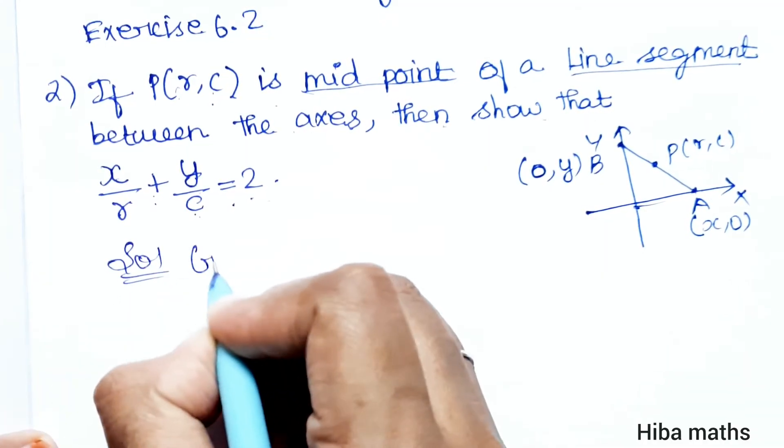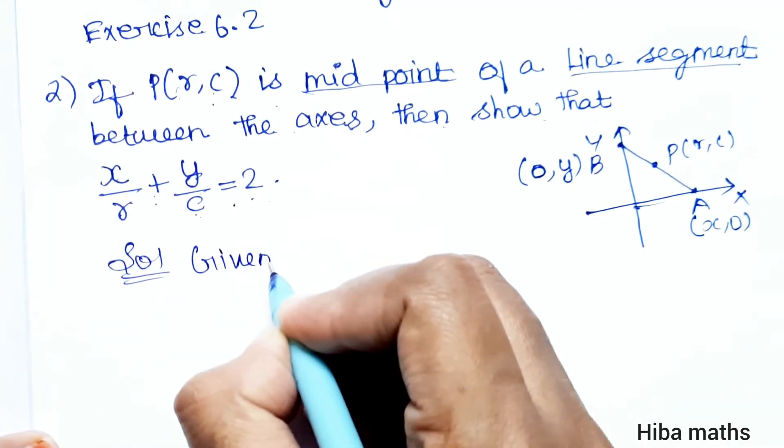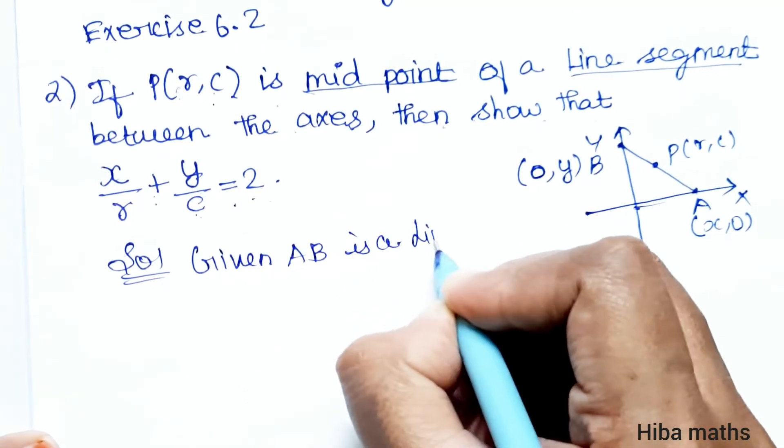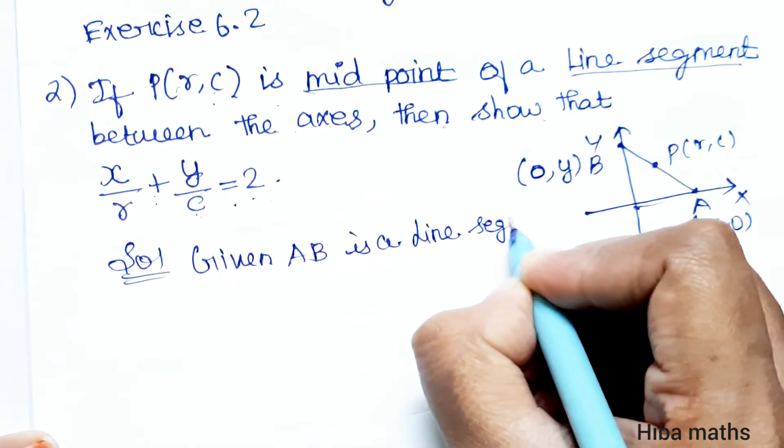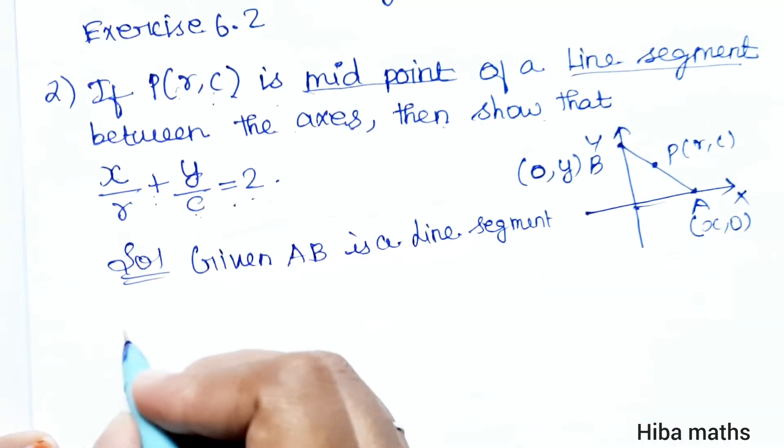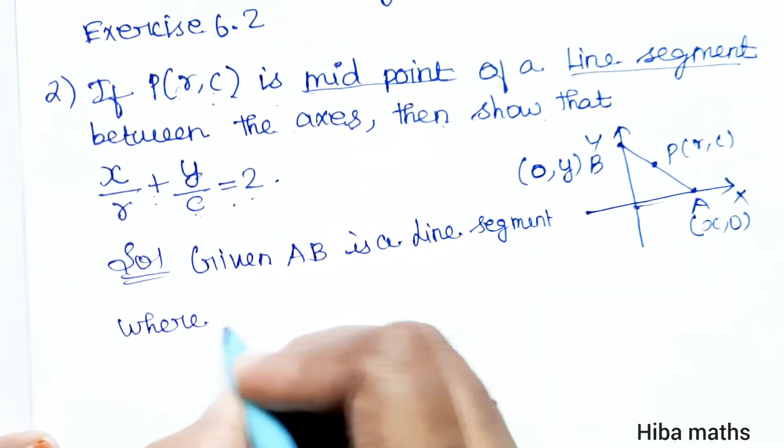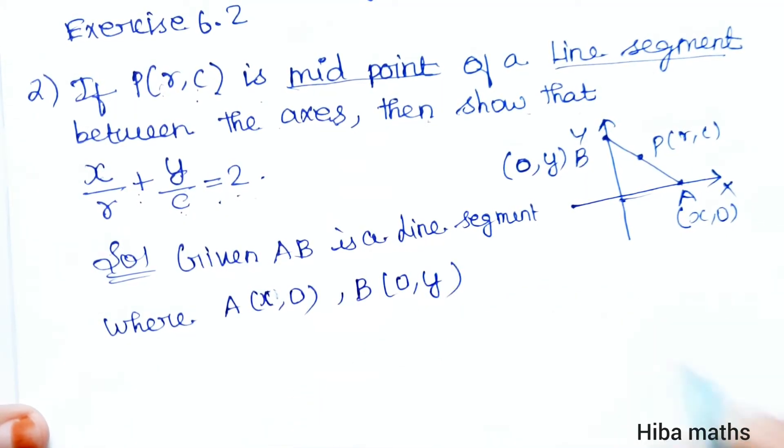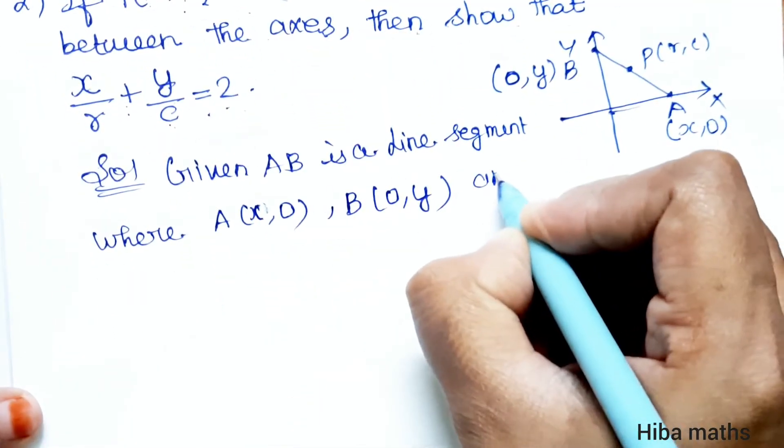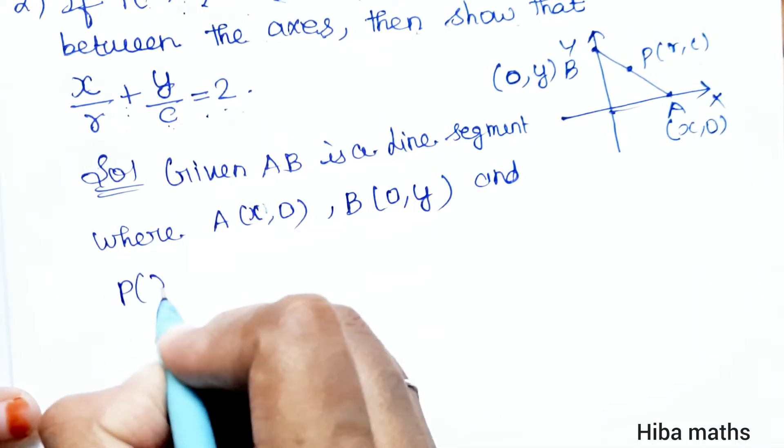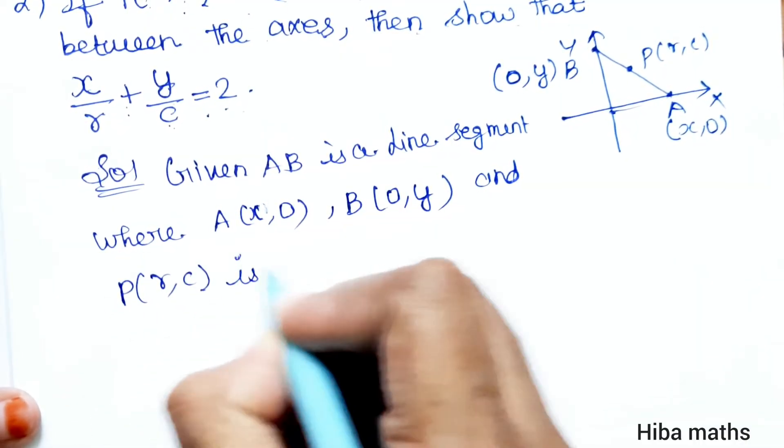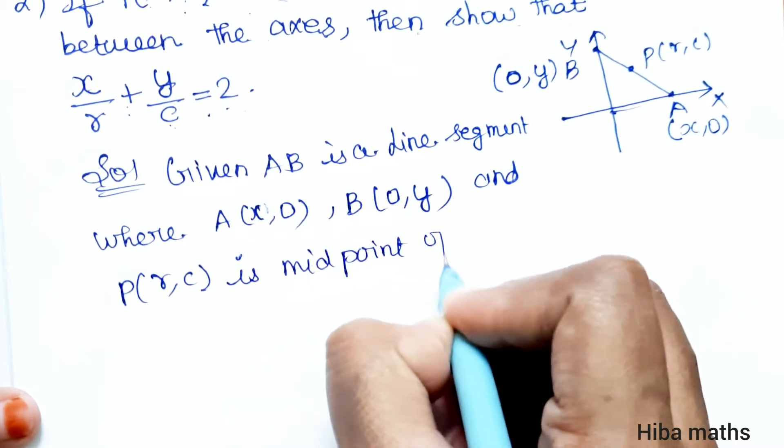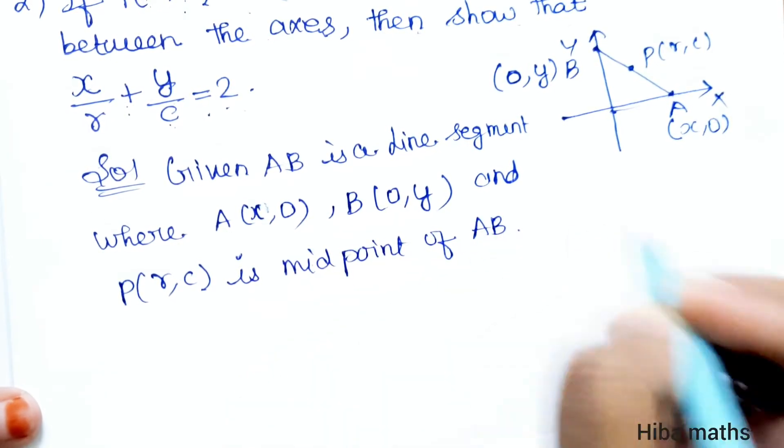Solution is given. AB is a line segment where A has coordinates (x,0) and B has coordinates (0,y), and P of (r,c) is midpoint of AB.